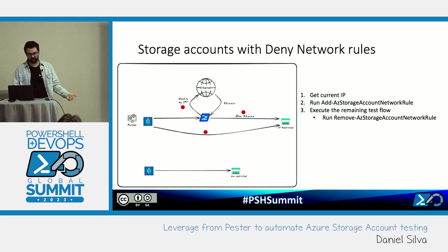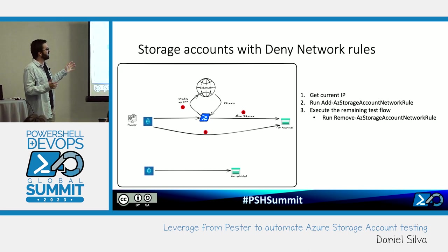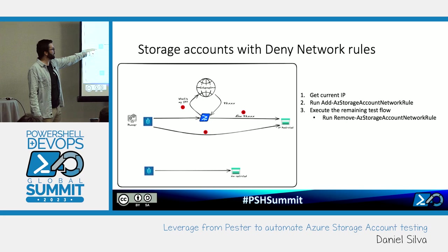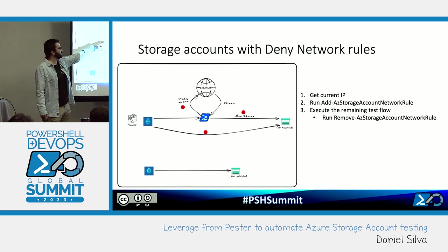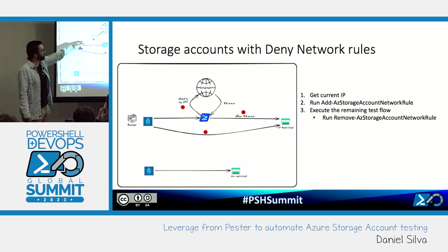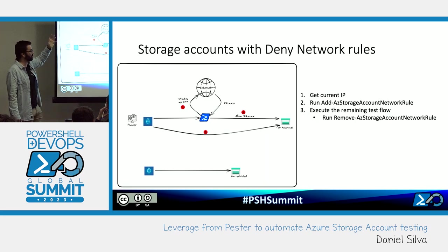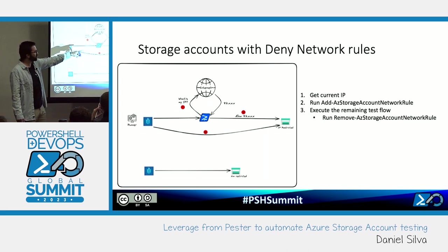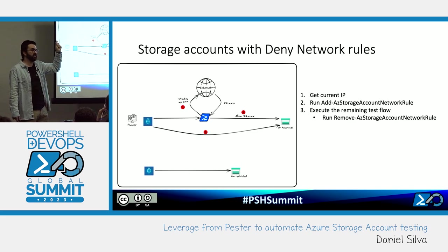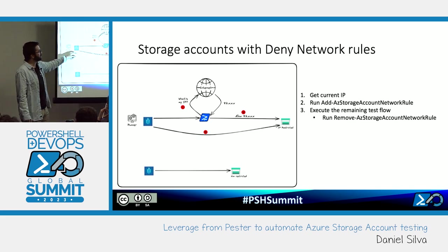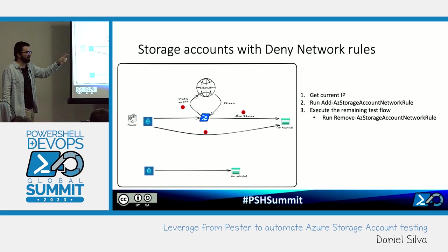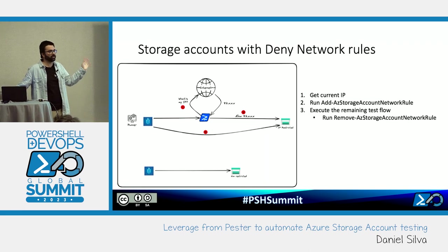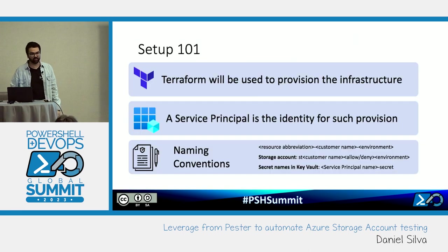The high-level solution is: when the runner executes, it runs a script that checks what its current IP is via an API, then sets a network rule to allow that IP. We run all the tests, and afterwards run the same command but with 'remove' instead of 'add'. I'll be showing all of this in just a second — I'm just trying to get rid of the slides so we can get to the fun part.